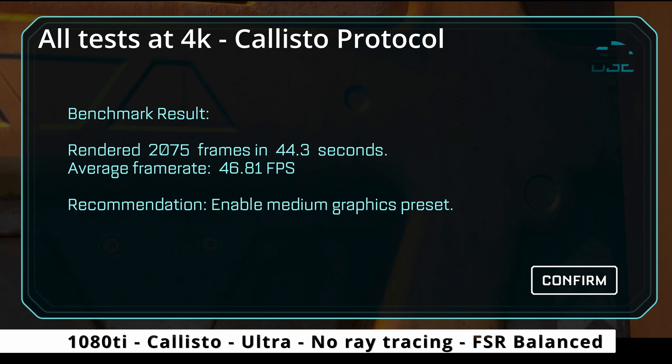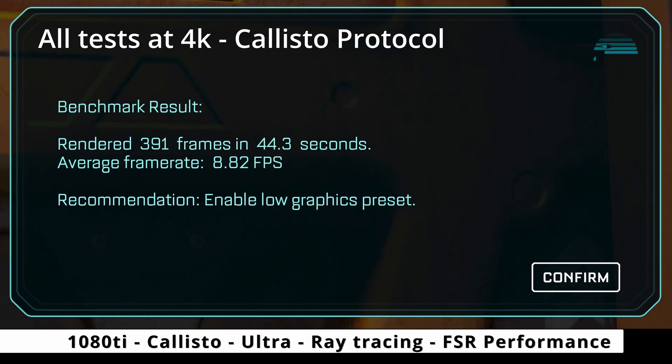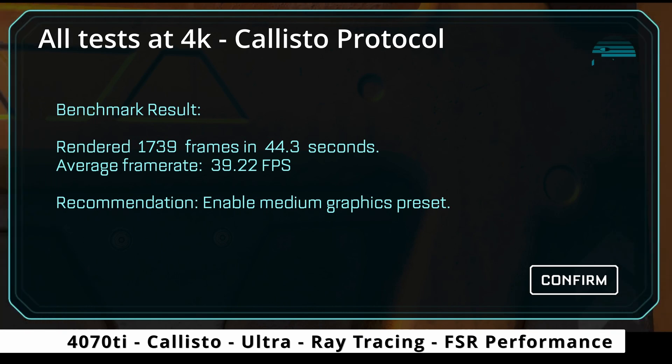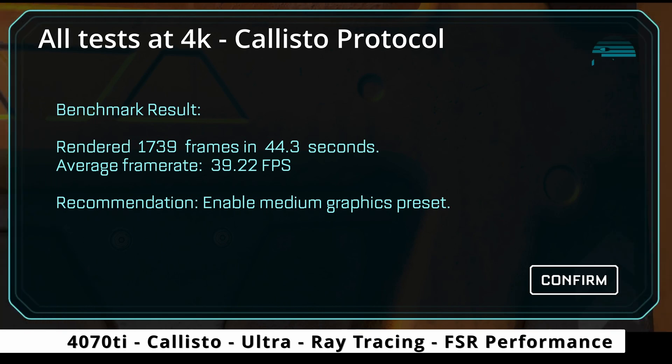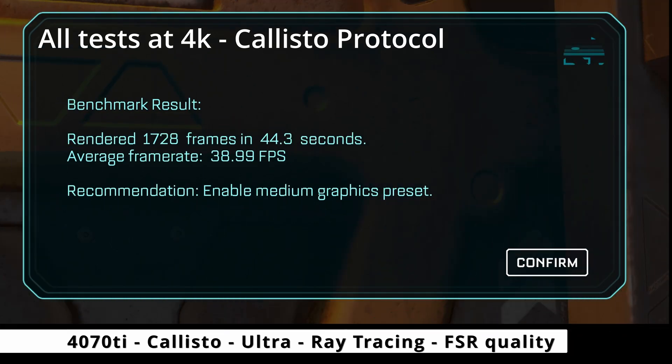Moving on to Ray Tracing with FSR Performance on the 1080 Ti — which is a little bit of a joke — it's 8.82 FPS, definitely not playable. Whereas Ray Tracing FSR Performance on the 4070 Ti is 39.22 — borderline playable; personally I like things at 60 FPS. But with FSR Quality Mode it's 38.99.